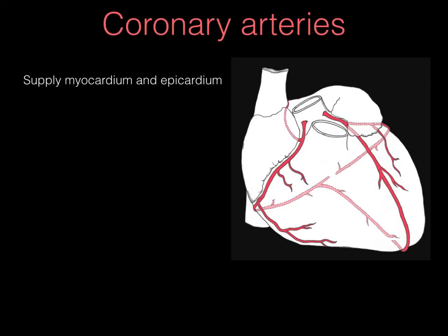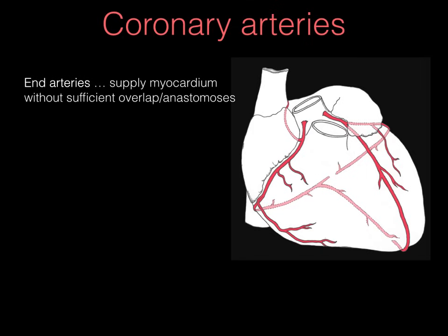Coronary arteries supply the myocardium and epicardium of the heart — myocardium being the heart muscle tissue. Coronary arteries are considered end arteries, meaning they supply myocardium without sufficient overlap and anastomosis from other coronary arteries. Each coronary artery is basically an end artery. For example, if there's a blockage, all the tissue downstream no longer gets oxygenated blood. You might think that an anastomotic connection would allow blood to flow retrogradely and supply that area, but clinical studies show this does not occur — the whole area downstream suffers ischemic damage.